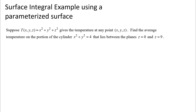In this video we're going to look at another surface integral example, this time using a parametrized surface. You might notice that this problem is almost the same as the problem from the last video. We've got a temperature function that gives the temperature at any point xyz — the same temperature function we had in the last video — and we're supposed to find the average temperature on some surface. This surface is not given in parametric form, but we'll talk about why that would be useful for this particular problem.